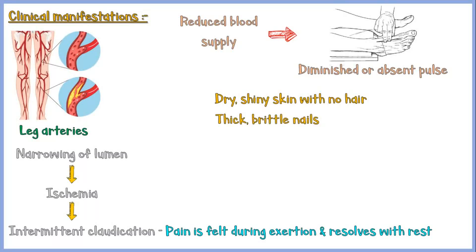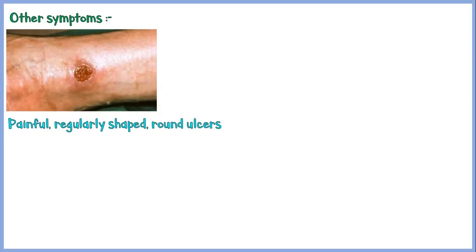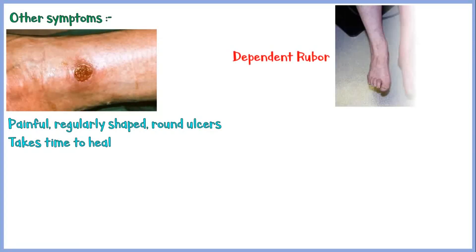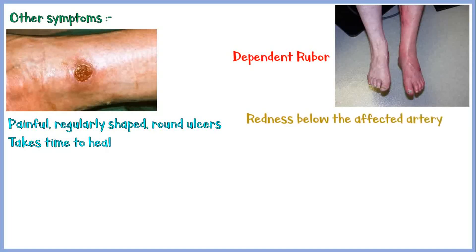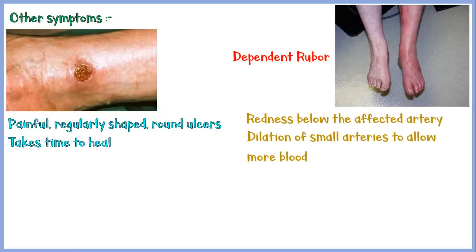It is important to keep in mind that unlike venous obstruction, which is characterized by buildup of edematous fluid, there is no edema in arterial obstruction. Other symptoms include painful, regularly shaped round ulcers that do not heal normally, and dependent rubor, which is redness distal to the affected artery when placed under gravity, due to dilation of small arteries. These vessels lose their ability to constrict and ultimately cause redness.